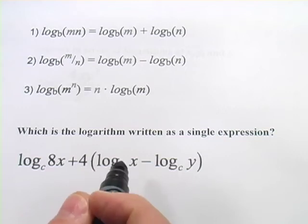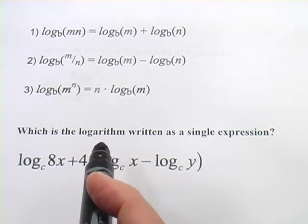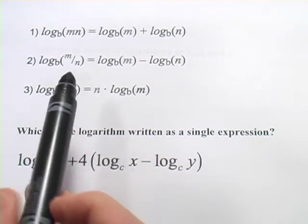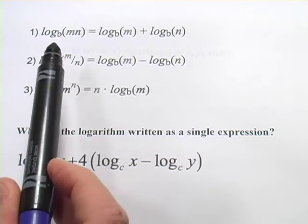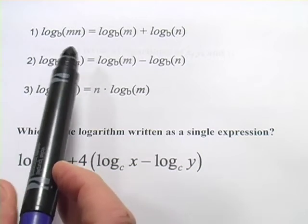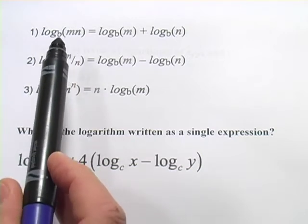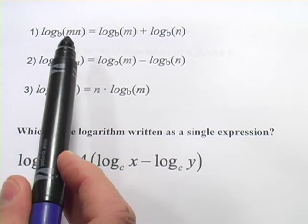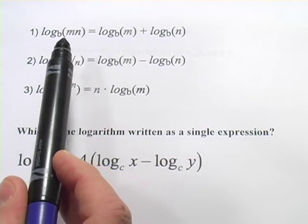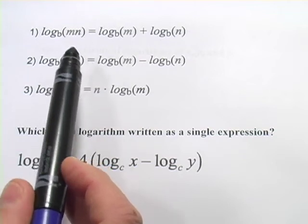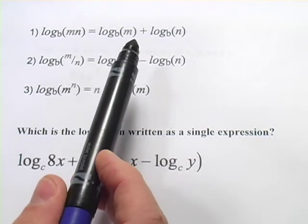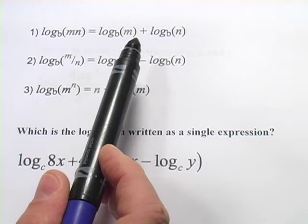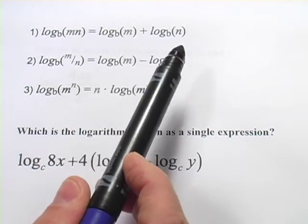In these problems, we're dealing with some of the properties of logarithms. The first one shows that if you have the log of a particular base, in this case base b, of two things multiplied by each other, you can express that as log base b of m plus log base b of n.